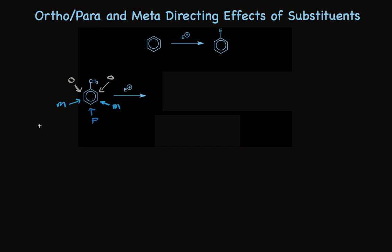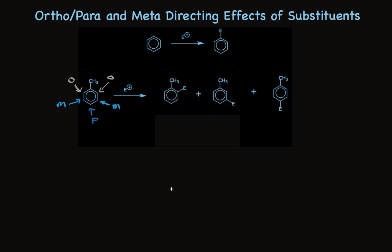Look at the possibilities. I've shown the electrophile substituting at the ortho position, the meta position, and the para position. There are only three distinct products even though there are five different positions, because two of those are exactly what we've already written. There are two ortho substitution products, but they're identical, so we only write one. The same thing is true with meta substitution.